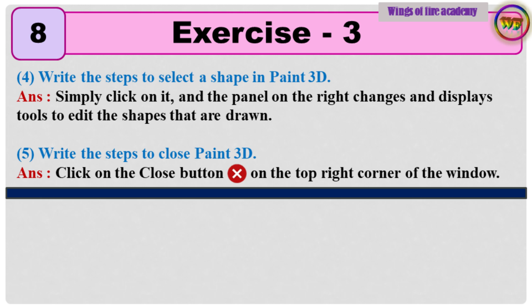Question 5: Write the steps to close Paint 3D. Answer: Click on the close button on the top right corner of the window.